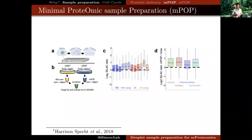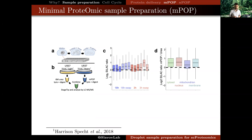Harrison Specht did a well-controlled experiment to evaluate why it works. He used cells labeled with either light or heavy isotopes, lysed with either standard six molar urea or with MPOP, and then analyzed by mass spectrometry to compare the efficiency of protein extraction. Harrison found that MPOP extracts proteins at least as efficiently as urea lysis, and this extraction is uniformly efficient across different cellular compartments such as the cytosol, the nucleus, the mitochondria, and the cell membrane.